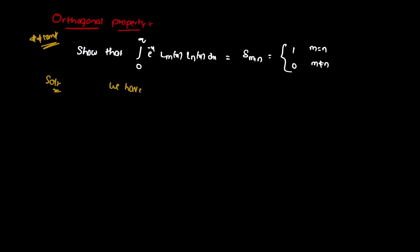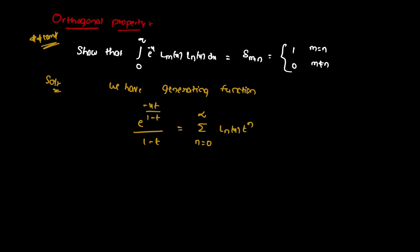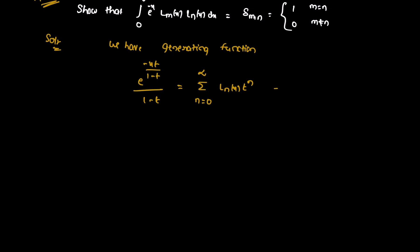We have a generating formula and generating function. The generating function of the Laguerre polynomial is: e^(-xt/(1-t)) / (1-t) = sigma, n=0 to infinity, L_n(x) · t^n. And this is a variable t.